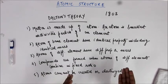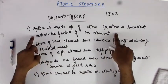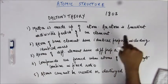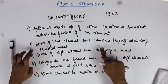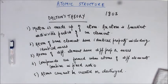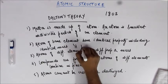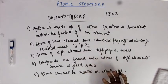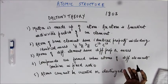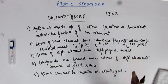Moving on: 'atoms of the same element have identical properties including identical mass' — no. There is an exception: atoms of the same element can have different masses. They are called isotopes. For example, hydrogen has three isotopes: H-1, H-2, and H-3. These have different masses. Similarly, C-12 and C-13 are isotopes of carbon with different masses, and uranium-235 and uranium-237 are atoms of the same element but with different masses.